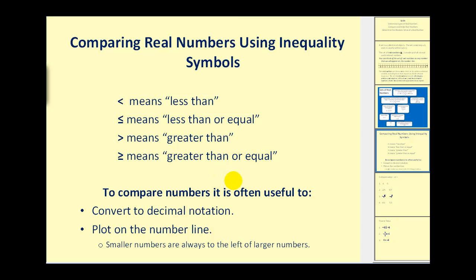To compare numbers, it is often useful to convert to decimal notation and or plot on the number line. Smaller numbers are always to the left of larger numbers on the number line.